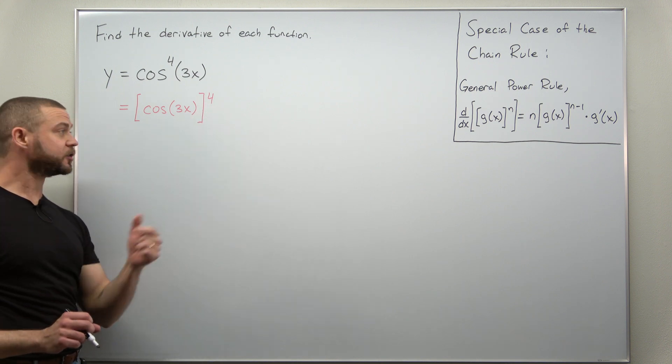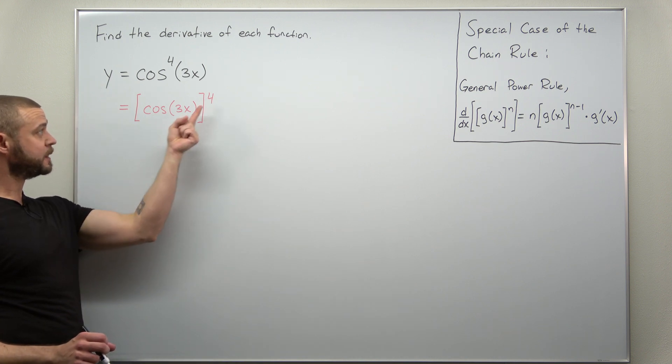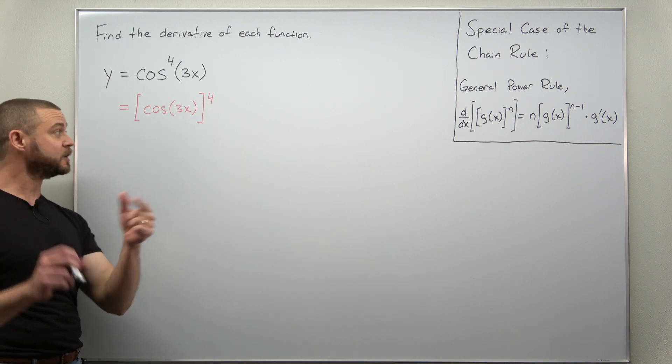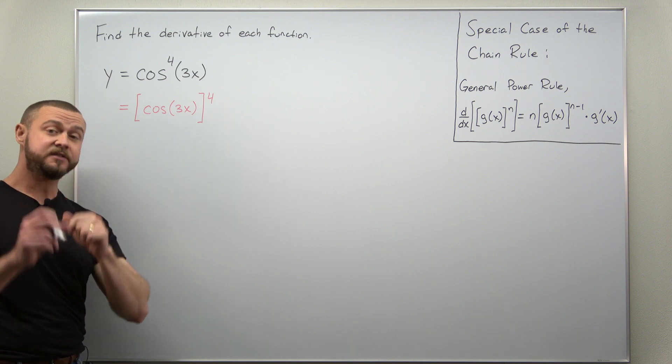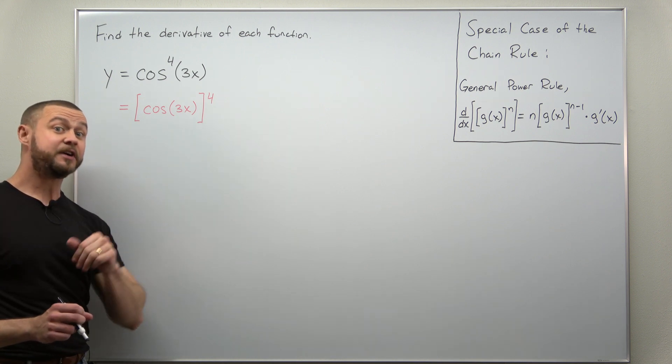Now that might give you the clue here that you have a composite function, you have a function inside another function, but notice this inner function is itself a composite. So we'll be applying the chain rule several times here.